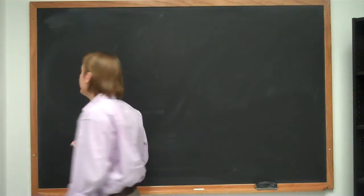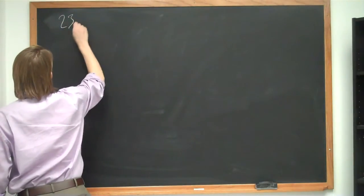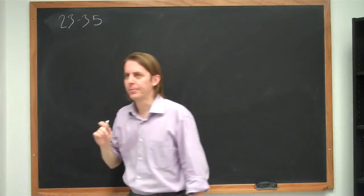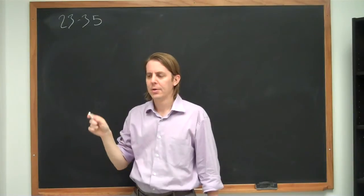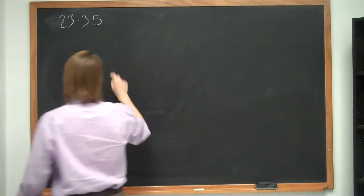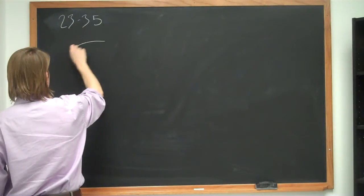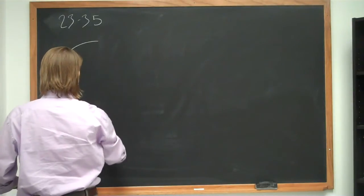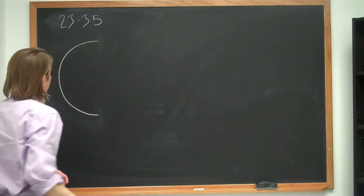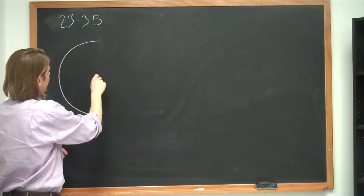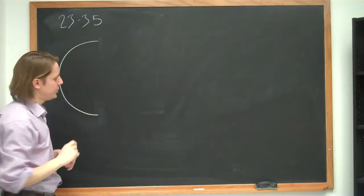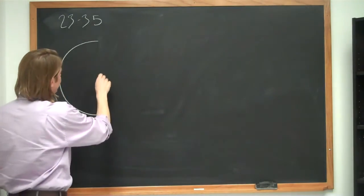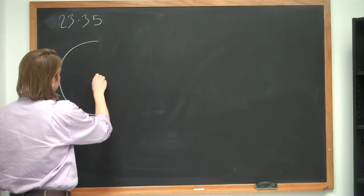This is problem 2335. In this problem we have a charged rod, 14 centimeters long, bent into a semicircle. The total charge is minus 7.5 microcoulombs, and we're asked what is the field magnitude and direction at the center.